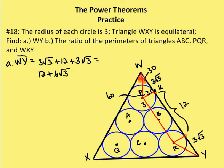Now I can figure out the distance from Y to W. It's just 12 plus two times three root three, combining KL (which is 12), WK, and LY, giving me 12 plus six root three. That's the answer to the first part of the problem.